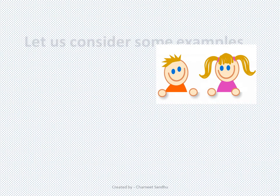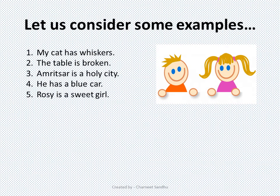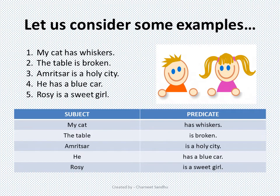Let us understand this with a few examples. 'My cat has whiskers.' In this sentence we are talking about the cat, so 'my cat' is the subject. The additional information we get about the cat is that it has whiskers, so 'has whiskers' is the predicate. Similarly, 'The table is broken.' Here we are talking about the table, so 'the table' is the subject, and 'is broken' is the predicate.